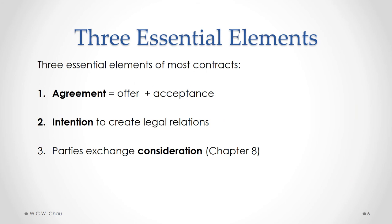There are three essential elements to have a valid legal contract. The first element is that there has to be an agreement, and an agreement arises when one party makes an offer and the other party accepts that offer. We'll look at what is an offer and what is an acceptance in much more detail in this module. The second element is that there has to be an intention to create legal relations — in other words, did the parties reasonably intend to actually create a legally binding contract in the particular circumstances? The third essential element, which we will cover in a subsequent module, is that there has to be an exchange of consideration between the two parties to the contract.